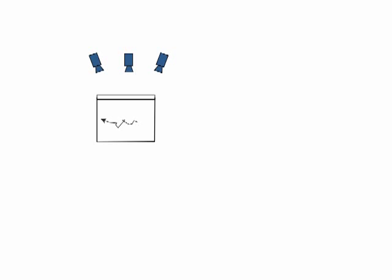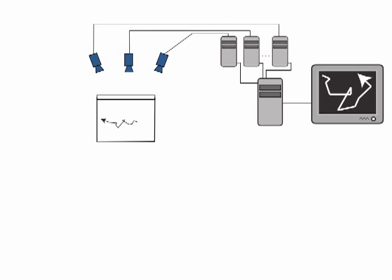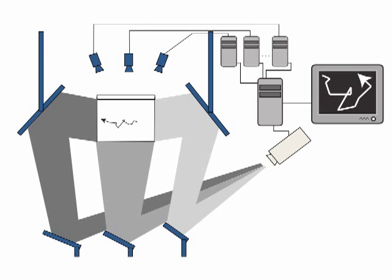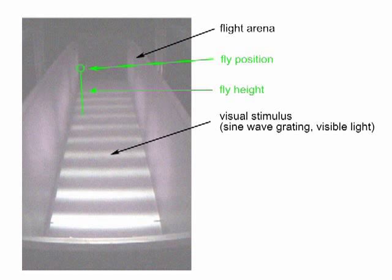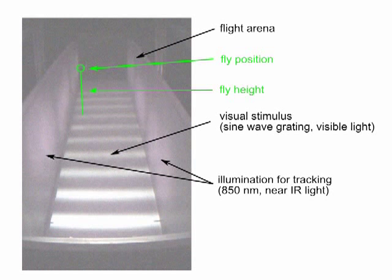Flies were released into our arena and filmed from above using five cameras. Custom software tracked the flies and provided position information with 40 millisecond latency. This information was used to update projectors showing patterns on the walls and floor of the arena. In the following movies showing fly location within the arena and visual stimuli projected on it, flies are shown circled in green and their altitude is illustrated with a green line extending from the floor of the arena. Visual stimuli such as the sinusoidal grating shown here were visible to the fly, while illumination for tracking was in the near-infrared and thus invisible to the fly.